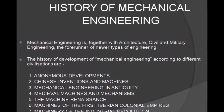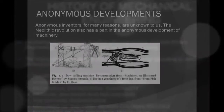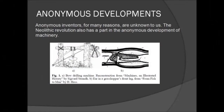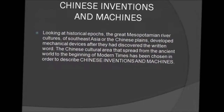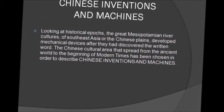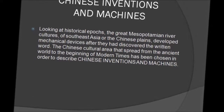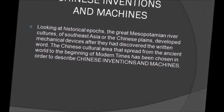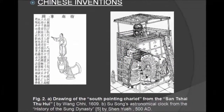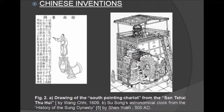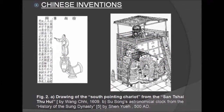The first one is animals development. The second is Chinese inventions and machines. This includes the Chinese invention of the south-pointing chariot.